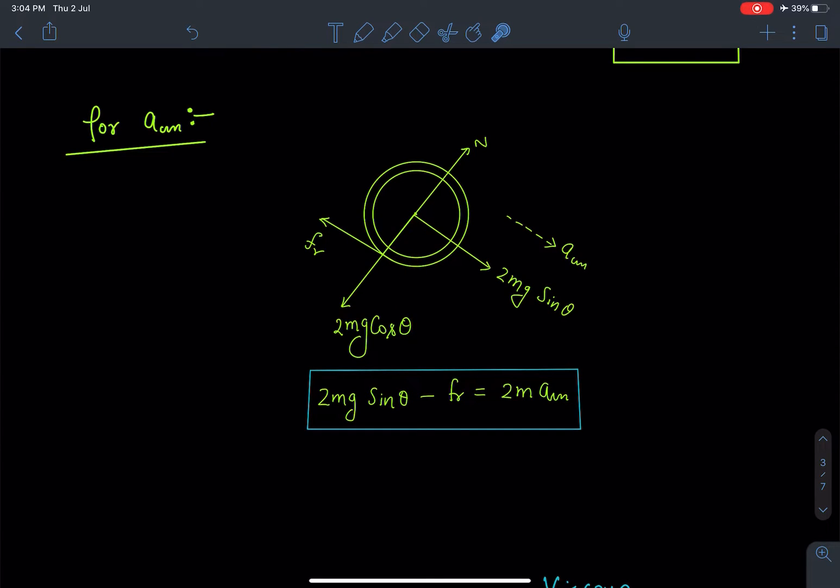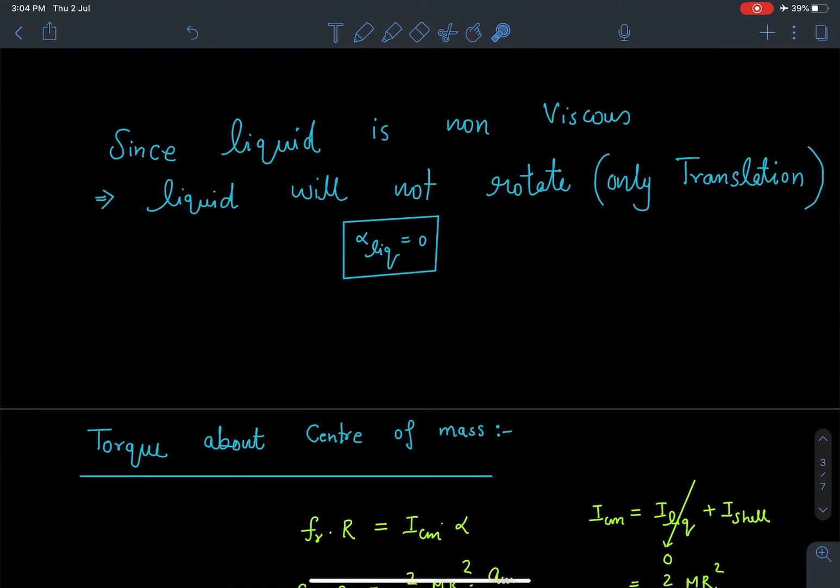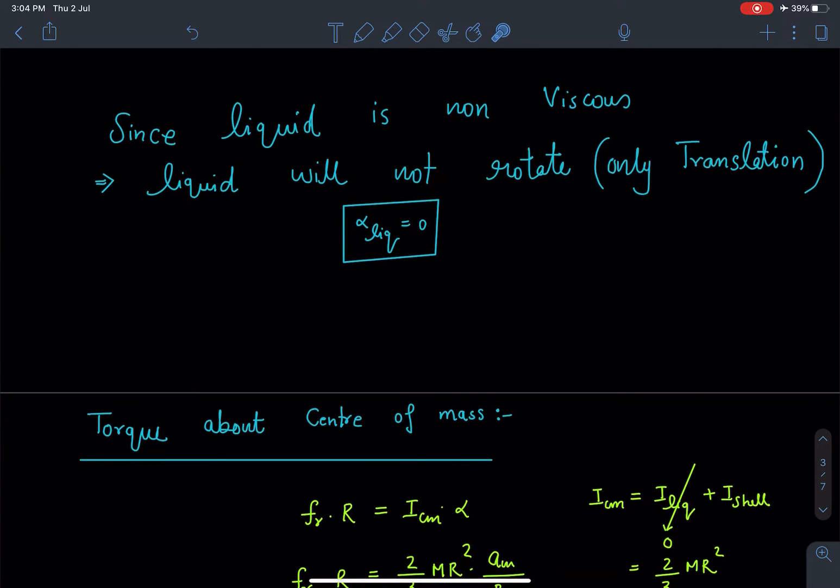So now here I can write easily that this acceleration equation or equation of motion of this shell for translation will become 2mg sinθ - F_R = 2m a_CM. So this is our first equation. So as I have mentioned earlier that since liquid is non-viscous, liquid will not rotate, it will just translate. So there is no angular acceleration term present in the liquid.